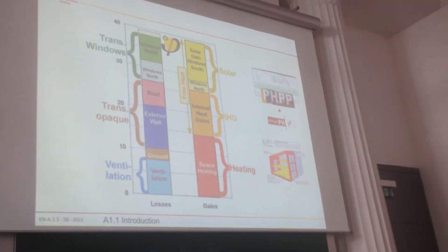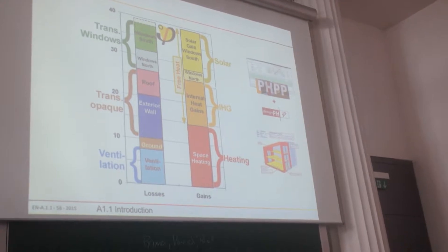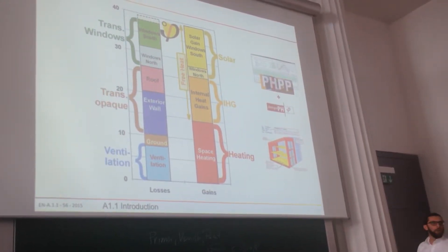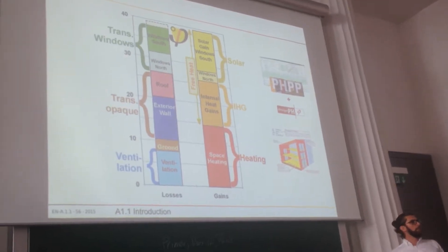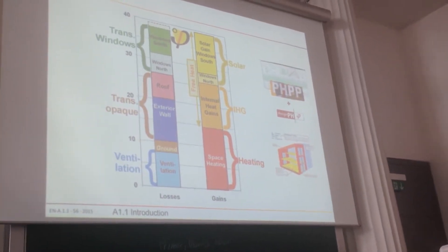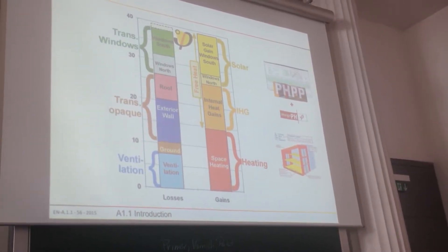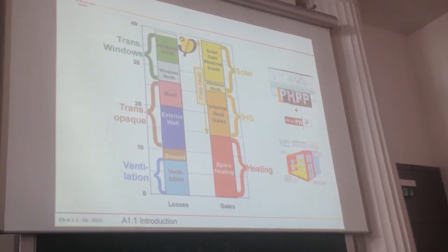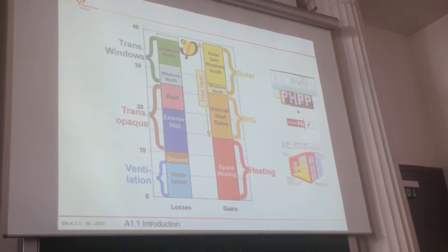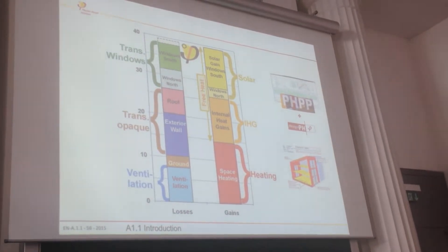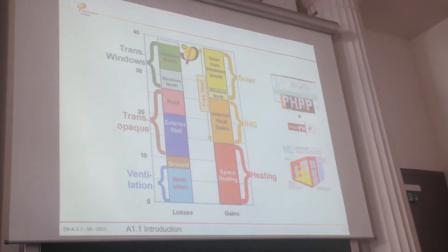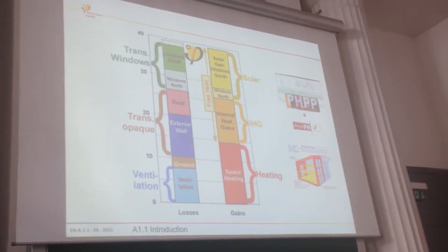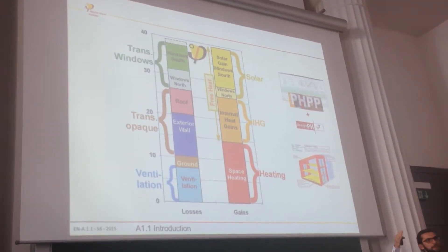We are losing energy through our areas, through our walls, through our windows. We have losses through our tightness as well. And on the other side, we have gains. We heard already about solar gains — it depends on which direction our glazings are. We heard that south is great. Take care that south is great, and we can create a barn later.